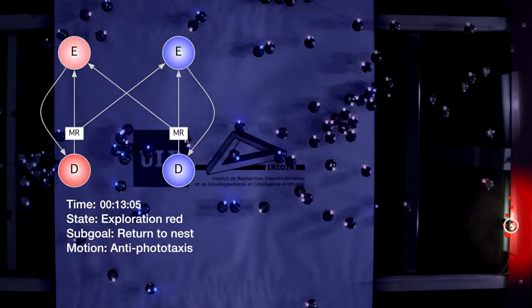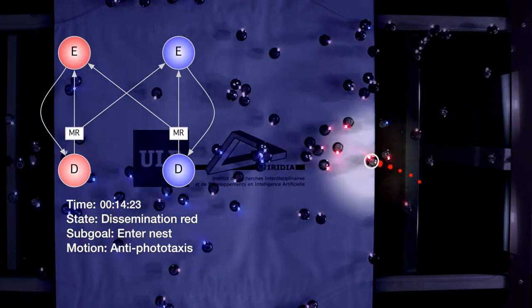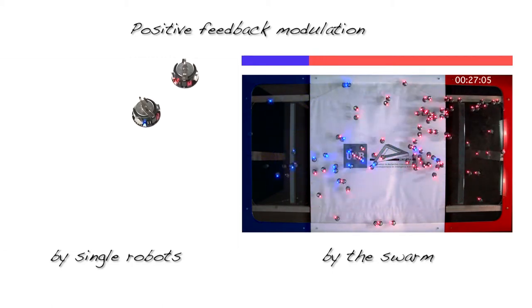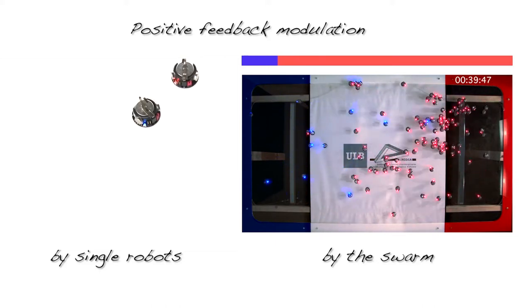Eventually, the robot returns to the nest and re-enters the dissemination state. In a way similar to honeybees, the effort each robot makes to promote a particular site is proportional to the quality of that site.